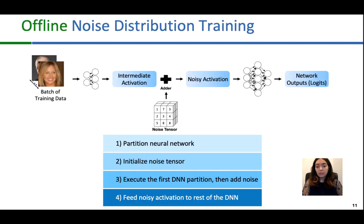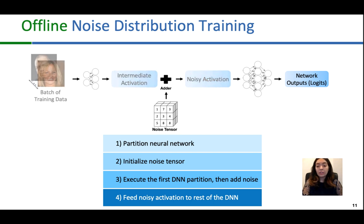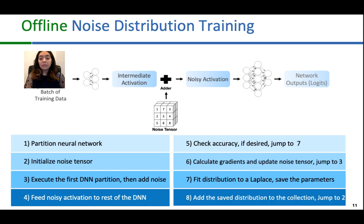During an offline noise distribution training phase, first, a pre-trained neural network is partitioned into two parts by optimizing for computation and communication costs while considering the resource constraints of the edge device. Then, the noise tensor is initialized by drawing samples from a Laplace distribution with mean of zero. This noise tensor is added to the intermediate activations generated from executing the first neural network part on a batch of input training images. The noisy activations are then fed to the second neural network partition to generate the network's final output — the logits, which are the probabilities the network assigns to each class for each input during classification. The validation accuracy is then compared to a given desired accuracy. If the desired accuracy is reached, we fit the noise tensor to a Laplace distribution and save the parameters of this distribution and the order of the noise tensor elements in the form of a tuple.